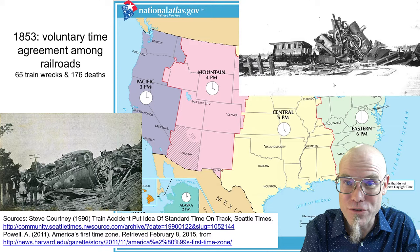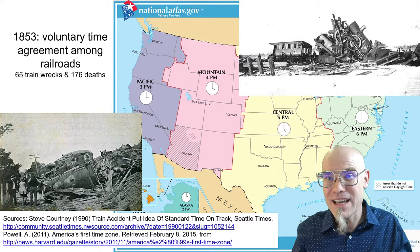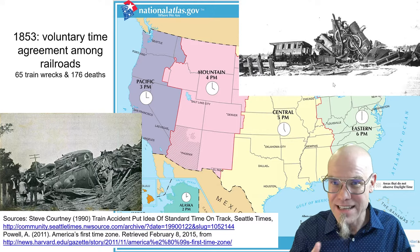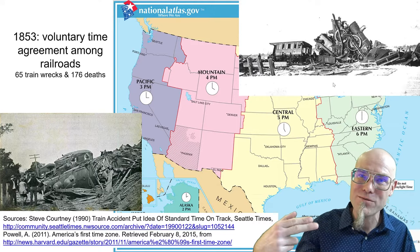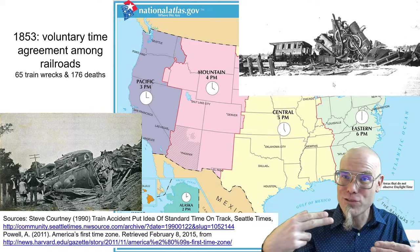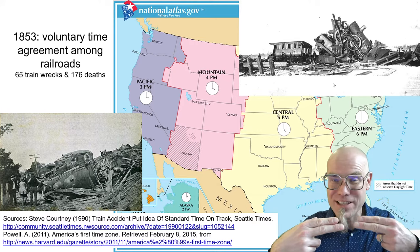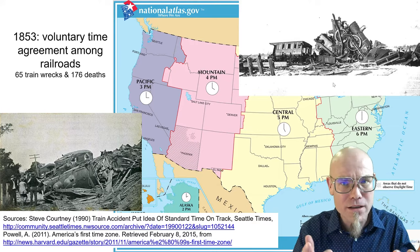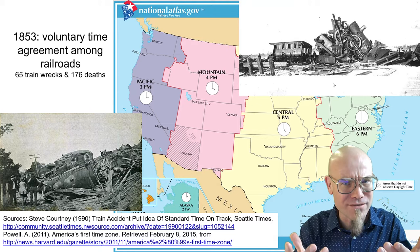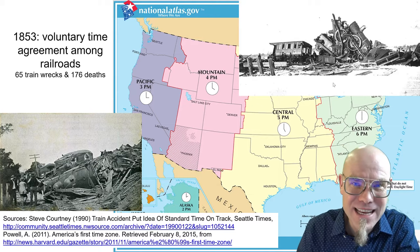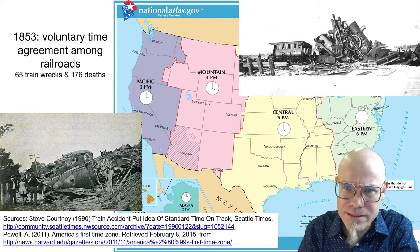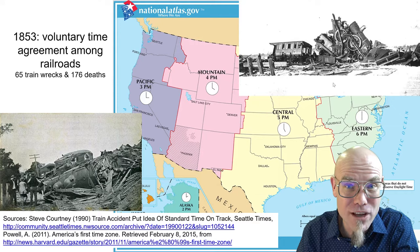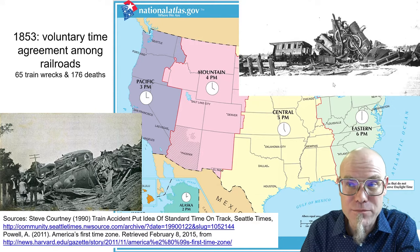Once we started to introduce trains in the 1800s and 1850s, there were a lot of train wrecks and deaths because one train going one direction should have crossed an hour earlier than another train going the same way — they would crash head-on into each other because we didn't have any notion of different time zones. So in 1853, the railroads had a voluntary agreement on time zones.